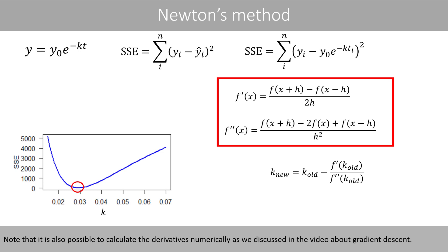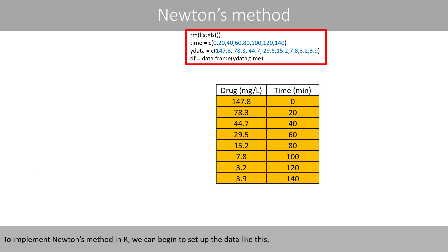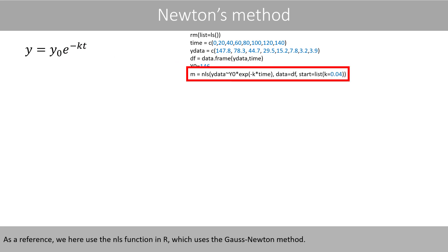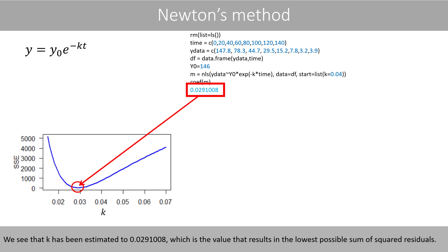Note that it is also possible to calculate the derivatives numerically, as discussed in the video about gradient descent. To implement Newton's method in R, we set up the data, fix the value of y0 to 146 since we will only estimate k in this example. As a reference, we use the NLS function in R, which uses the Gauss-Newton method. We see that k has been estimated to 0.0291008, which is the value that results in the lowest possible sum of squared residuals.